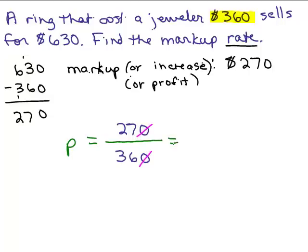And then just reduce 27, 36. So you could divide the top and bottom by 9 and that'll give you 3 fourths. And now we need to change that to a percent. So we multiply by 100 percent.